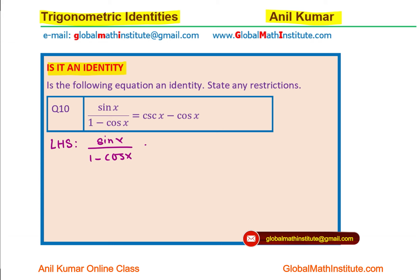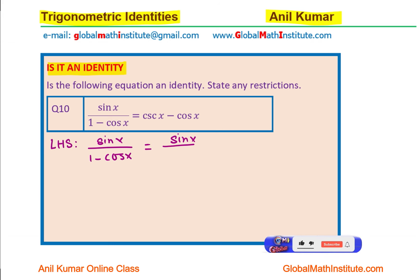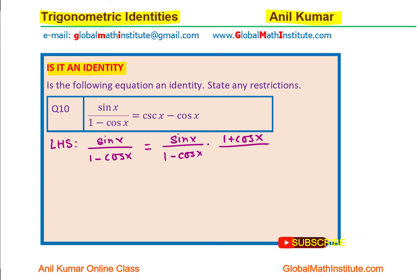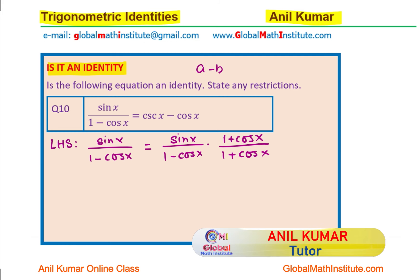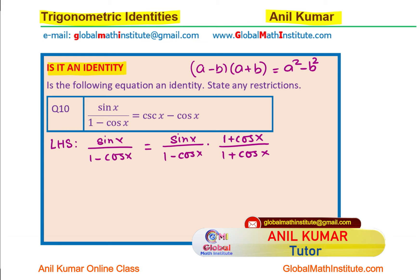Let us rationalize this. We can write this as sin x over 1 minus cos x, times 1 plus cos x over 1 plus cos x. You are multiplying by 1 plus cos x and also dividing by the same number, so effectively multiplying by 1 — that really does not change the equation. However, it helps us write the denominator as 1 minus cos squared x, using the identity: a minus b times a plus b equals a squared minus b squared.